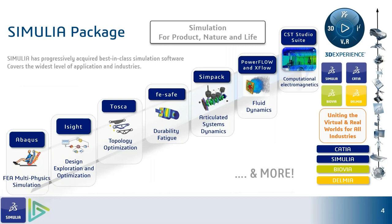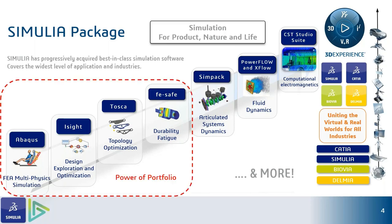An important part of our Simulia package is understanding what it contains. It's not only the electromagnetic solution explained in this webinar — there are other solutions as well. We have Abaqus, which is a very well-reputed FEA modeling tool. When you buy Abaqus, you also get optimizers such as Isight and Tosca, as well as a durability tool like fe-safe. Simulia also contains a good system dynamics tool with Simpack, as well as fluid solvers based on the Lattice Boltzmann method through PowerFlow and XFlow. We also cater to Catia, Biovia, and Delmia through a unified solution called the 3DEXPERIENCE Platform.